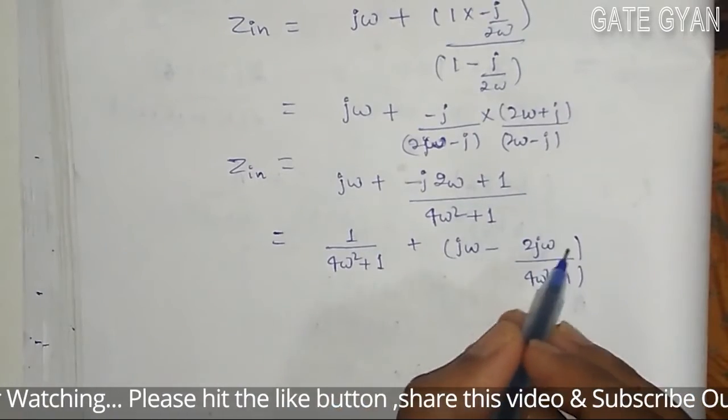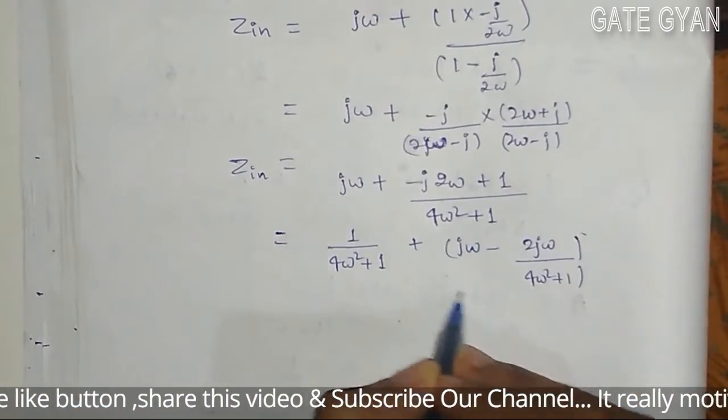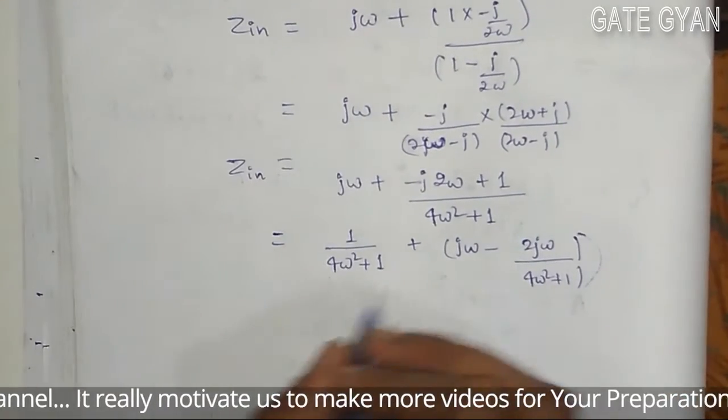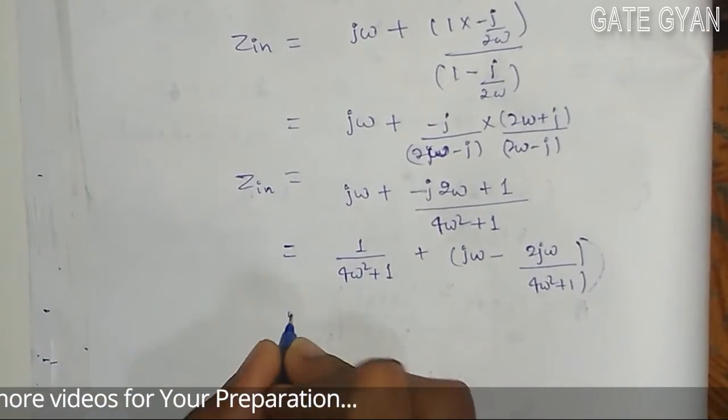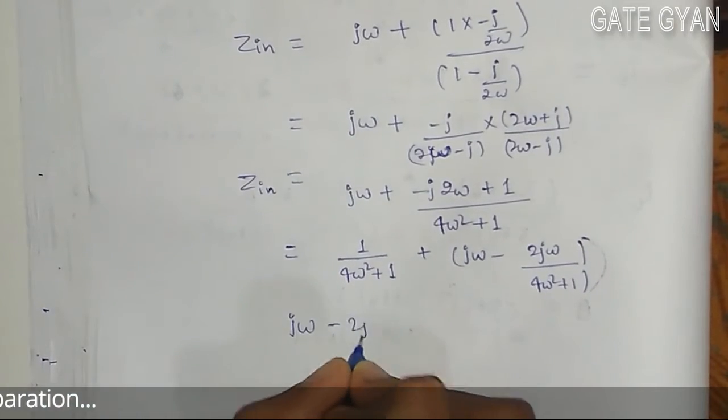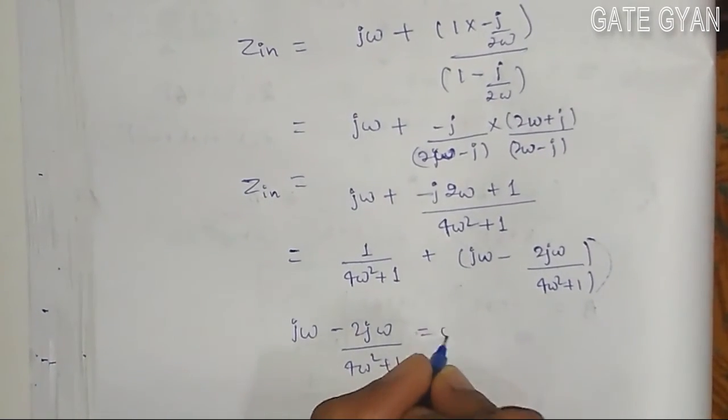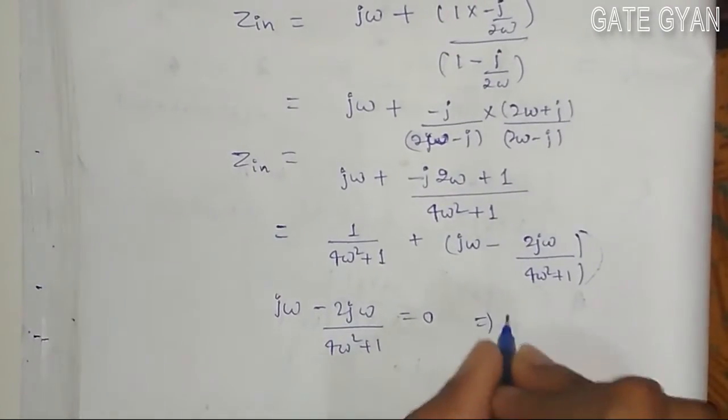So I will just equate this whole term to 0 to get the condition of resonance. So under resonance, j omega minus 2j omega upon 4 omega square plus 1 is equal to 0.